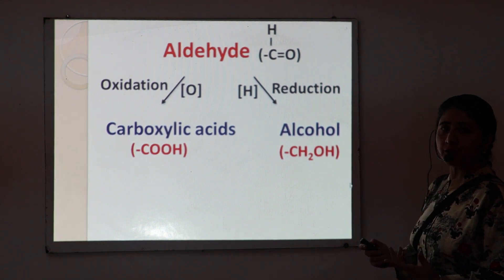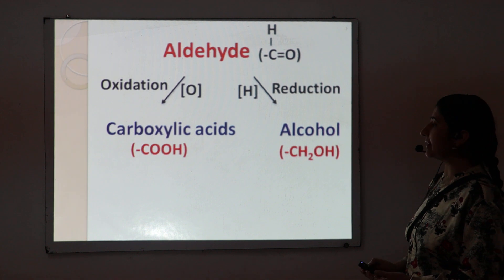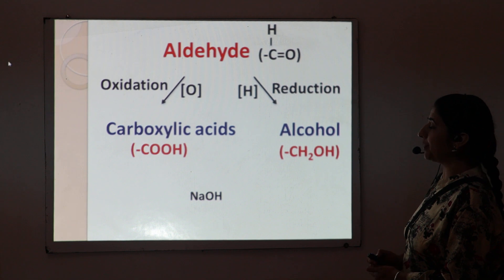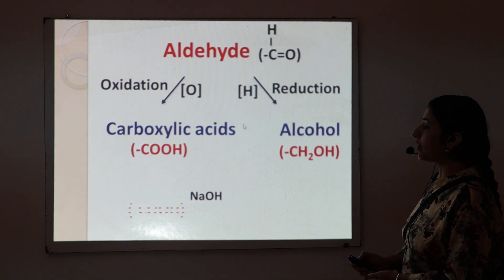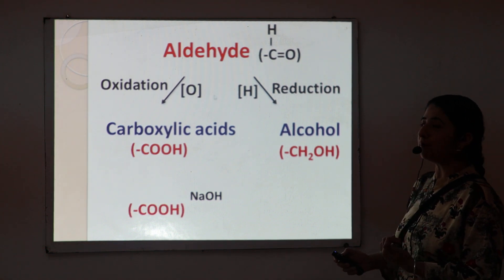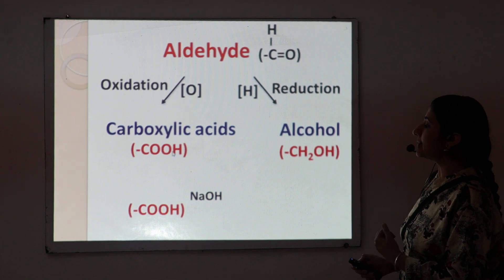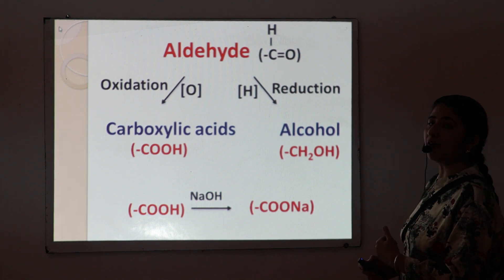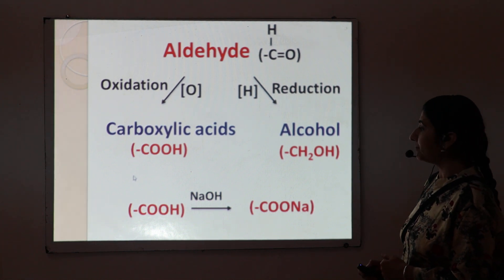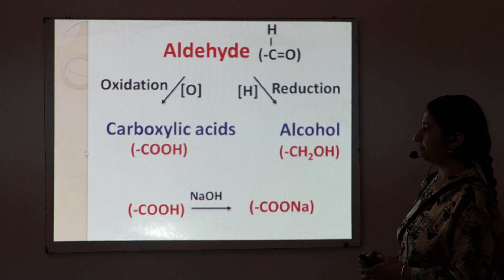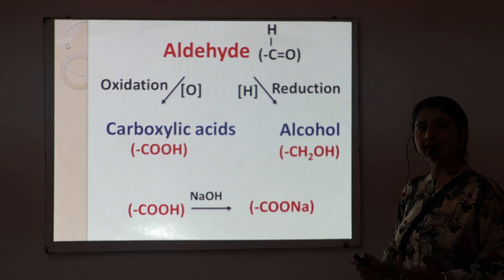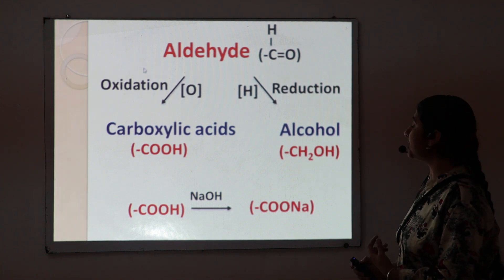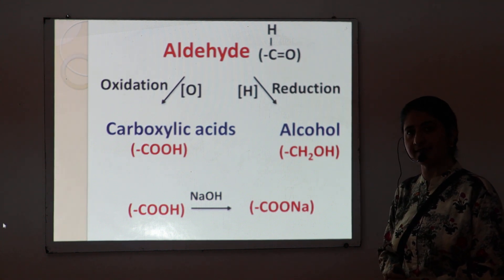Since the Cannizzaro reaction takes place in the presence of concentrated sodium hydroxide, the carboxylic acid produced as one of the products is converted into a sodium carboxylate — that is, the sodium salt of carboxylic acid — with the loss of water. So in the Cannizzaro reaction, we get two products: number one is alcohol, and second one is the sodium salt of carboxylic acid.